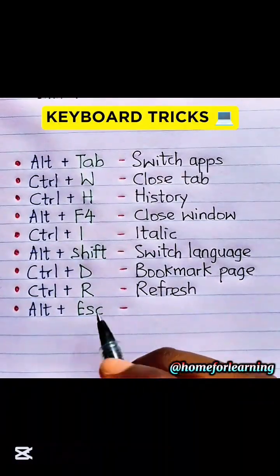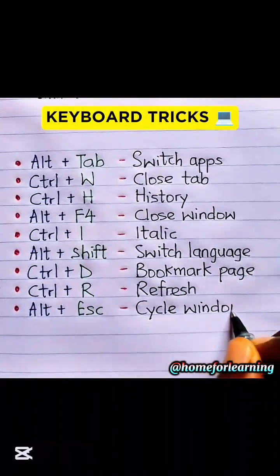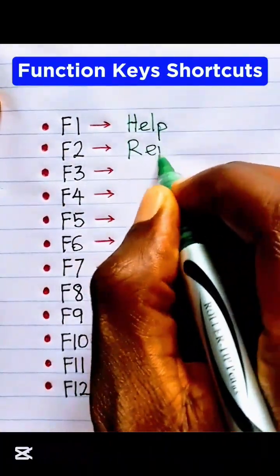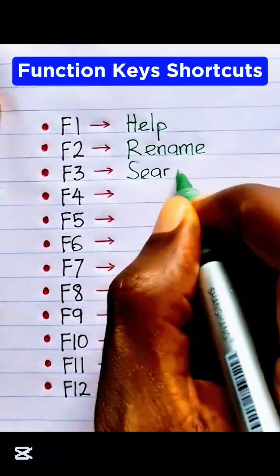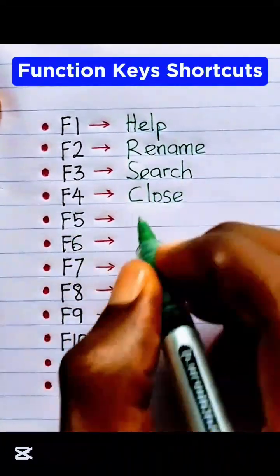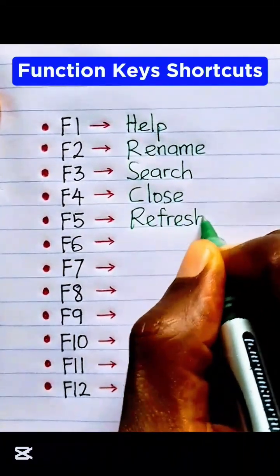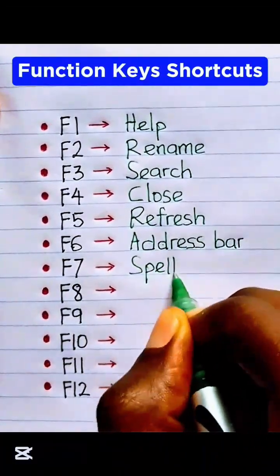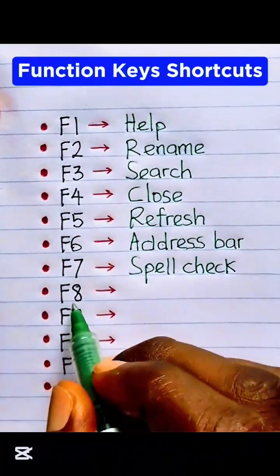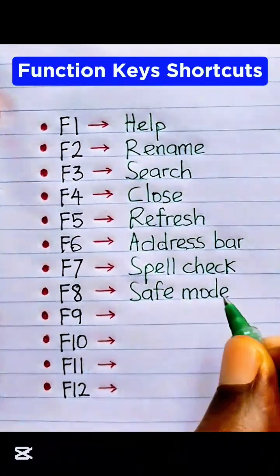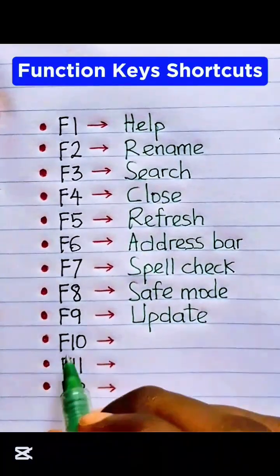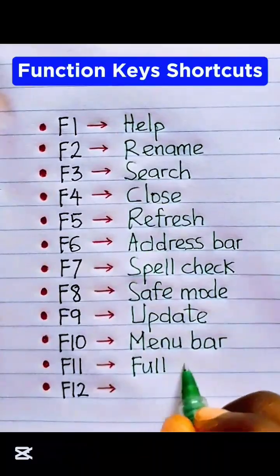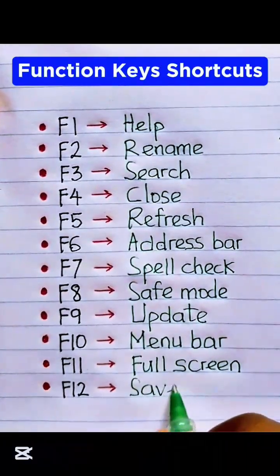Alt Escape: Cycle Windows. F1: Help. F2: Rename. F3: Search. F4: Close. F5: Refresh. F6: Address Bar. F7: Spell Check. F8: Save Mode. F9: Update. F10: Menu Bar. F11: Full Screen. F12: Save As.